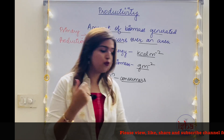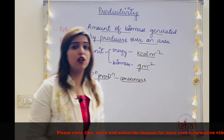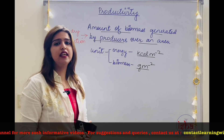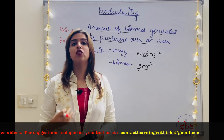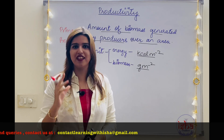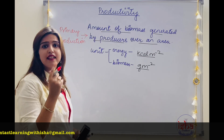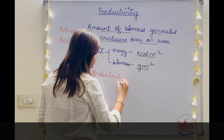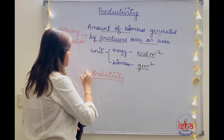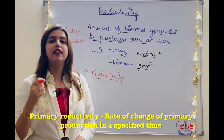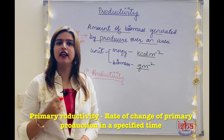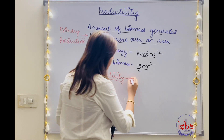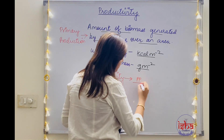A term that comes from this is called productivity. What is productivity? Whenever I talk about the rate for something — let's say acceleration, which is the rate of change of velocity — similarly, primary productivity is the rate of change of primary production. The time factor will also be included, so it is primary production over time.